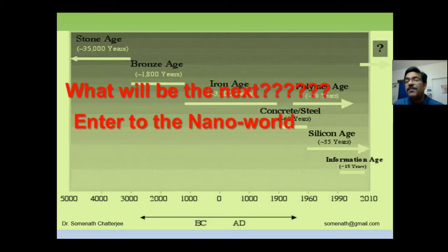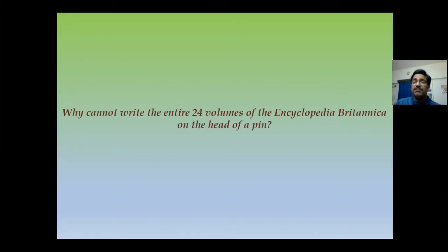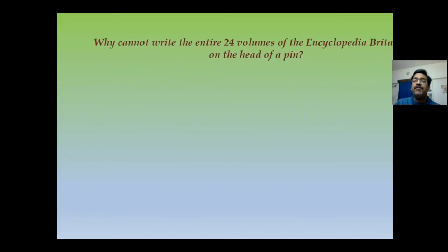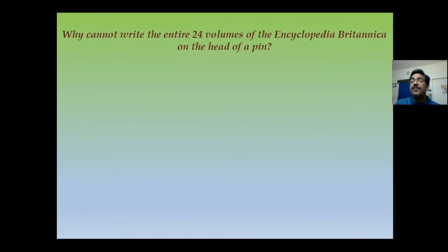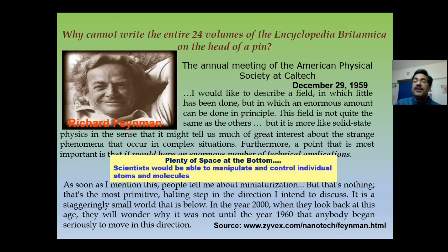To interpret these things exactly — when we are trying to write the 24 volumes of Encyclopedia Britannica on the head of a pin — we are basically very surprised to know that it can be accommodated in such a small dimension. All 24 volumes, the total volumes of that knowledge, can be written in a very small dimension.